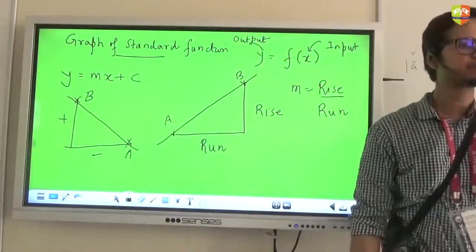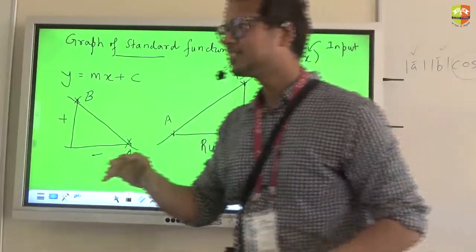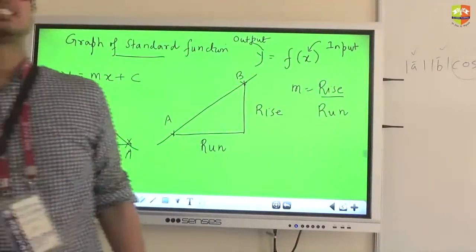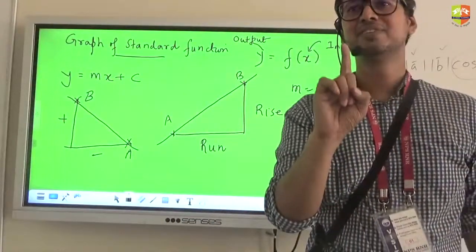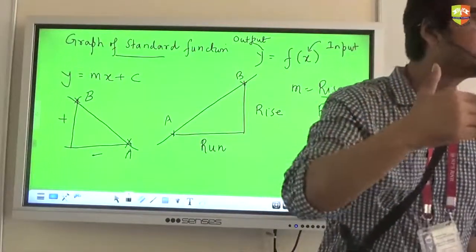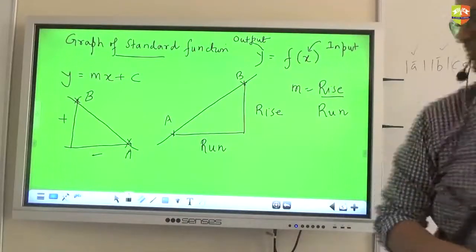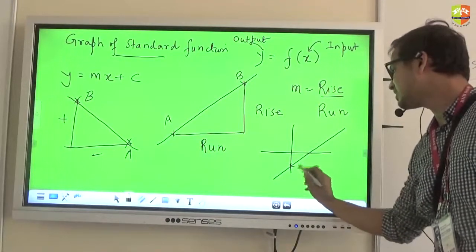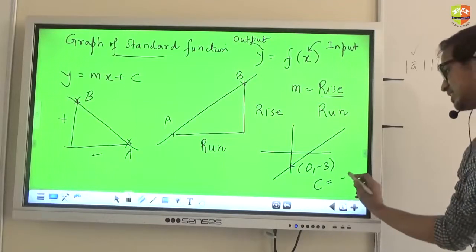Okay? What is C by the way? Y intercept. Y intercept. What is Y intercept? It's a distance from the origin where the line cuts the y axis, but this is a directed distance. What is directed distance? Just like vectors. It also has a positive and negative attached to it. So if it is cutting the y axis above the origin, C value is? Positive. Positive. For example, if I draw a line like this, and I say this line is passing through 0, minus 3. What is C for this line? Minus 3. Don't say plus 3.